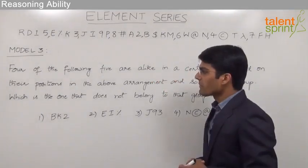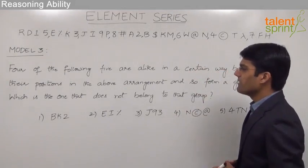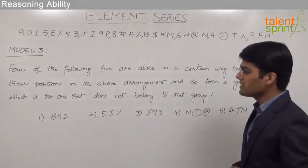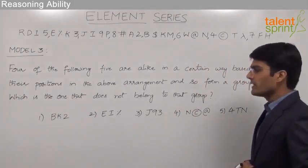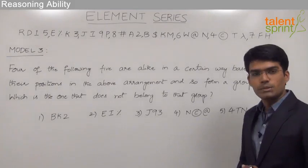Let us look at the question here. Four of the following five are alike in a certain way based on their positions in the above arrangement and so form a group which is the one that does not belong to that group.